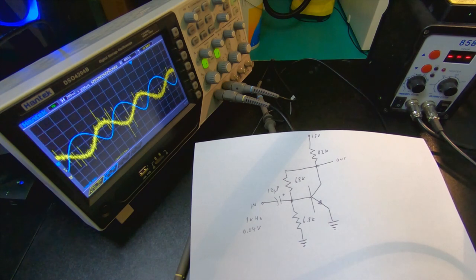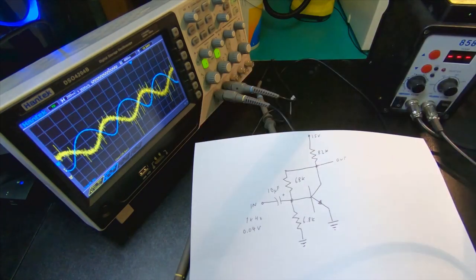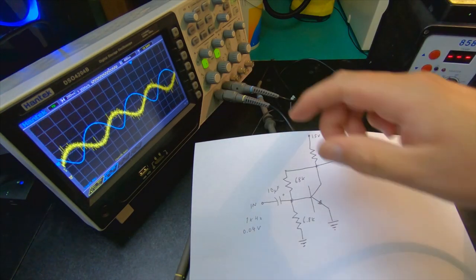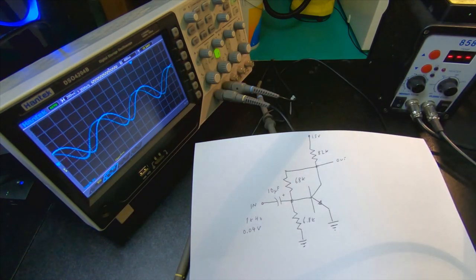So anyway, I put a 1kHz, and this is a very small signal, that's why it's all hairy here, it's 40mV. But the output signal, if you look, it's actually quite pure, it's the blue one, so that actually looks quite nice.